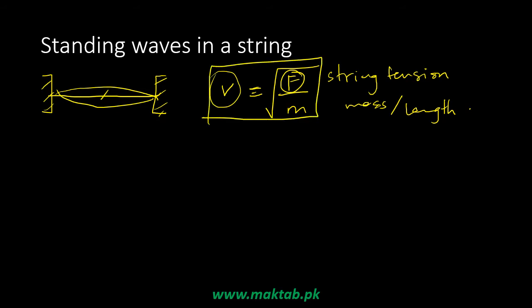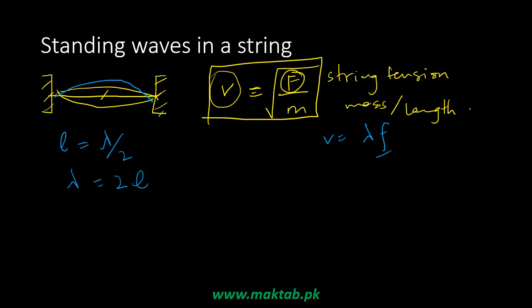We don't need to know the derivation of this relationship, but we want to see the speed. The relationship of speed and velocity is equal to lambda times frequency. We want to express it in terms of frequency. Looking at the wavelength: if the string length is L, then the wavelength is lambda divided by 2. So I can define the wavelength in terms of length — the wavelength is 2 times L. We call this the first harmonic.